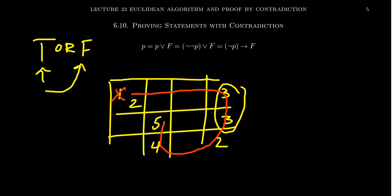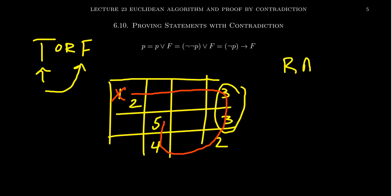This is an example of what we call a proof by contradiction, also referred to as reductio ad absurdum — a Latin phrase often abbreviated as RAA — which just translates as 'to reduce to the absurd.' You take an assumption, and if it leads to something absurd or to a contradiction, then that means your assumption was wrong.